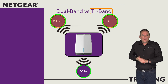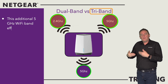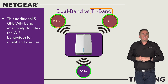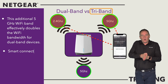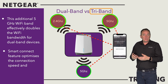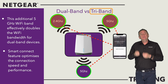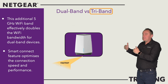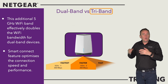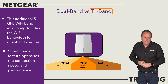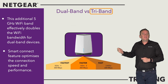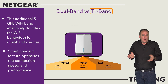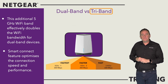This additional 5GHz Wi-Fi band effectively doubles the Wi-Fi bandwidth for dual band devices. Netgear's smart connect feature intelligently selects the best Wi-Fi band for each dual band device to optimize connection speed and performance. This is based on the device's own speed and performance. The Orbi Pro router then automatically manages each Wi-Fi connection, performing load balancing across the two 5GHz radios. This additional Wi-Fi bandwidth, combined with intelligence to segregate traffic based on Wi-Fi speed and load balancing, provides the best performance for multiple Wi-Fi devices.